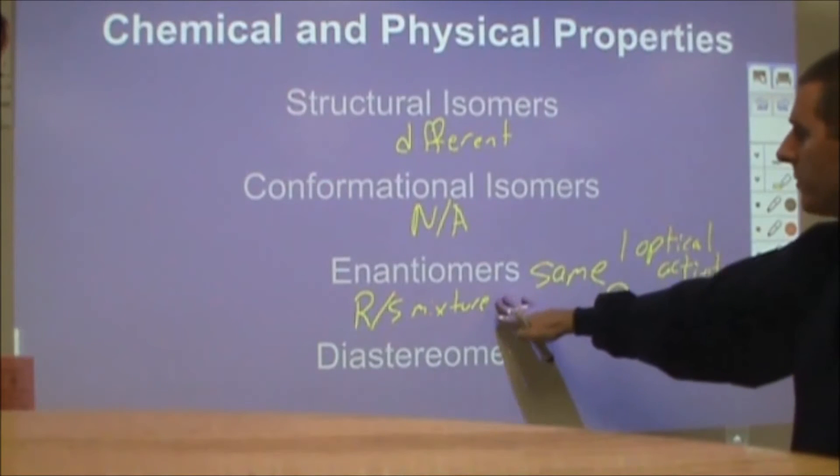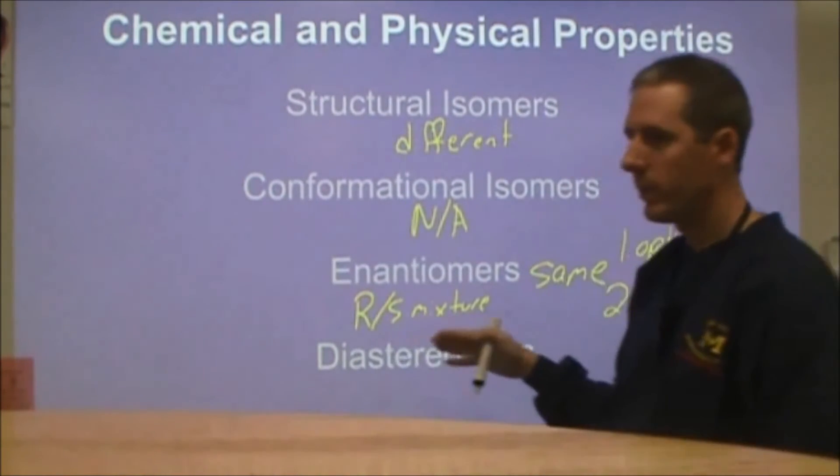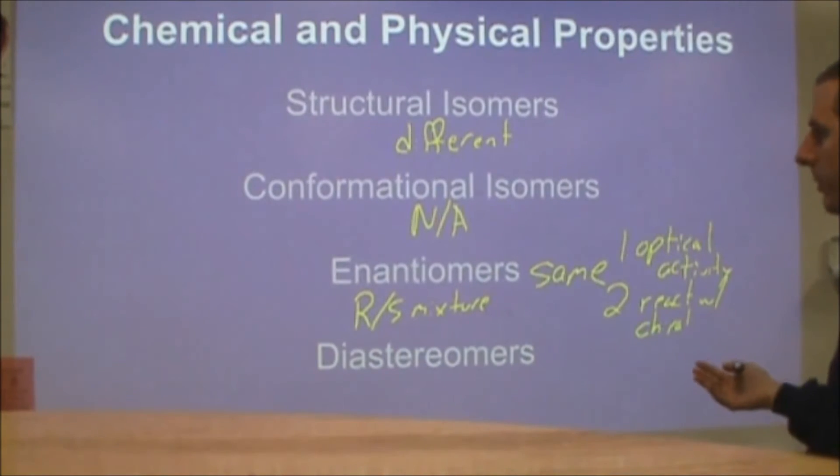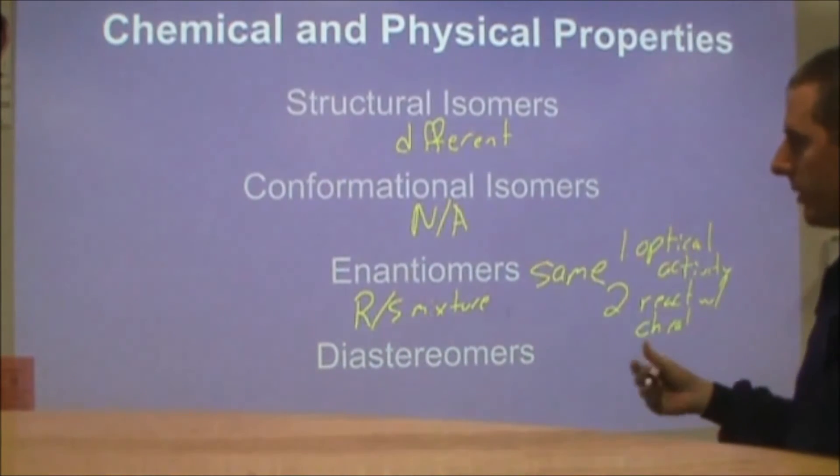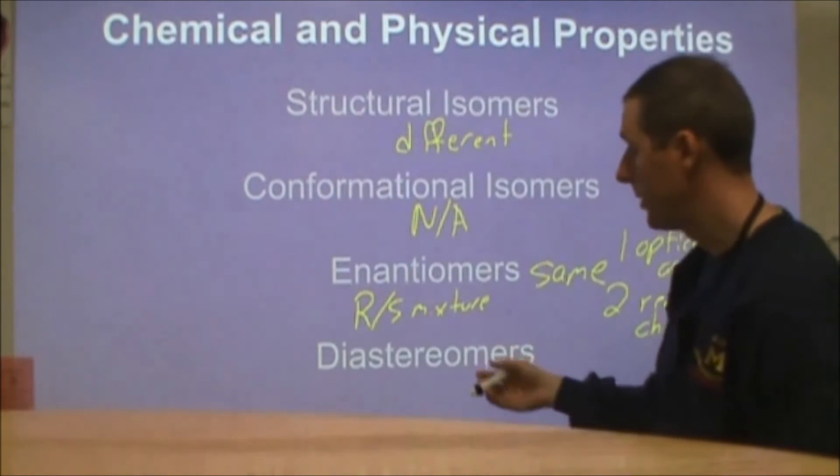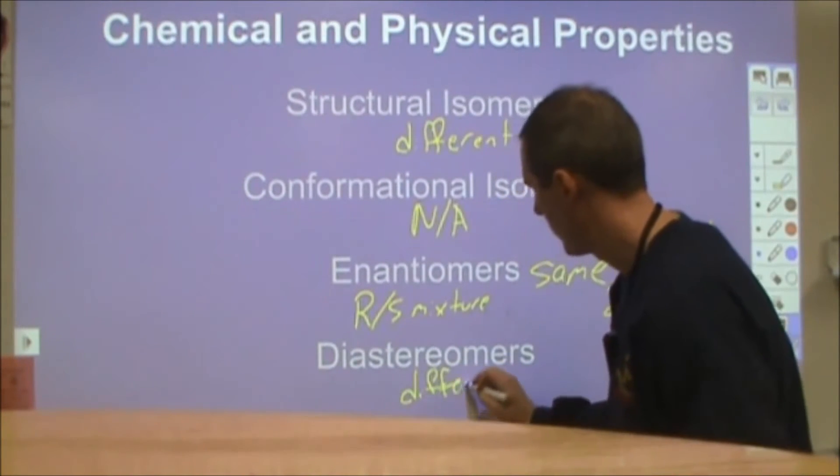But if you have some R and some S and you want to separate them, then you have to put them through something that's chiral. So you might put them through a bacteria where one of these gets digested and the other one gets excreted and that would help you separate them. The other thing you can do is you can add on another stereocenter by doing a chemical reaction and end up with diastereomers because these have different chemical and physical properties.